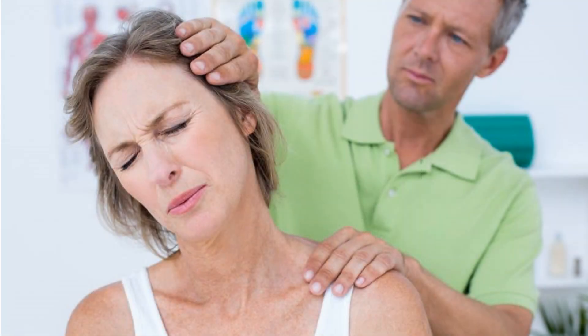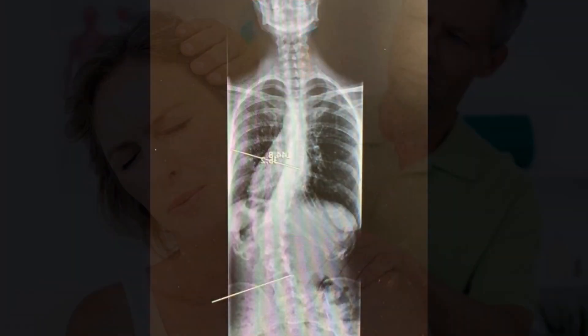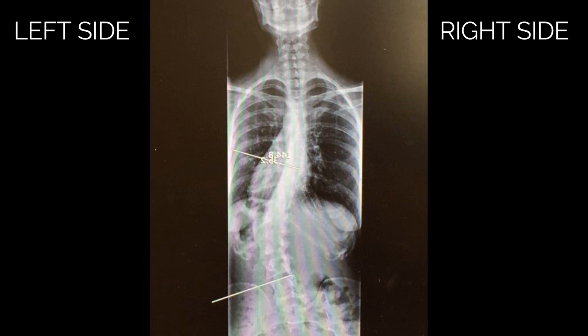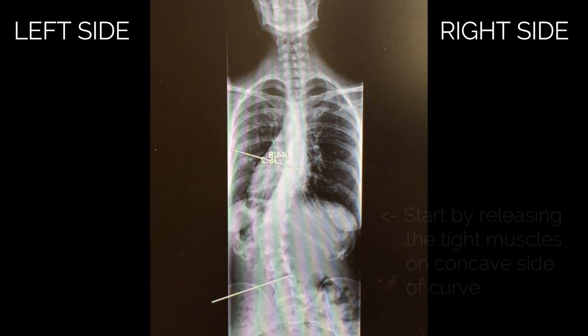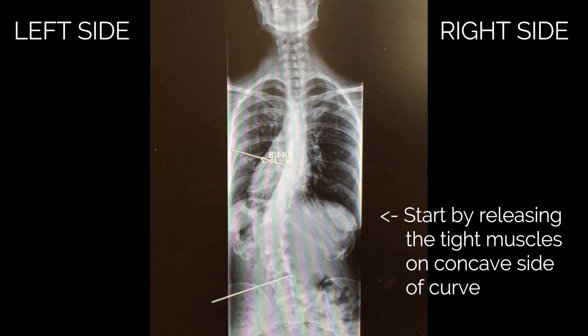Stretching a tight muscle is painful, and it's happening constantly in scoliosis. So the muscles are tight on both sides of scoliotic curves, just in different ways. You need to release the muscles on both sides of the curve in order to let the spine straighten out. In most cases, it's most effective to start by releasing the tight muscles on the concave side of the curve.